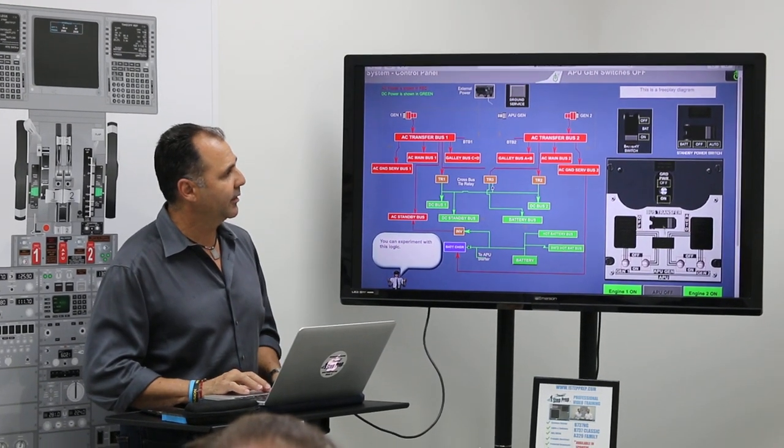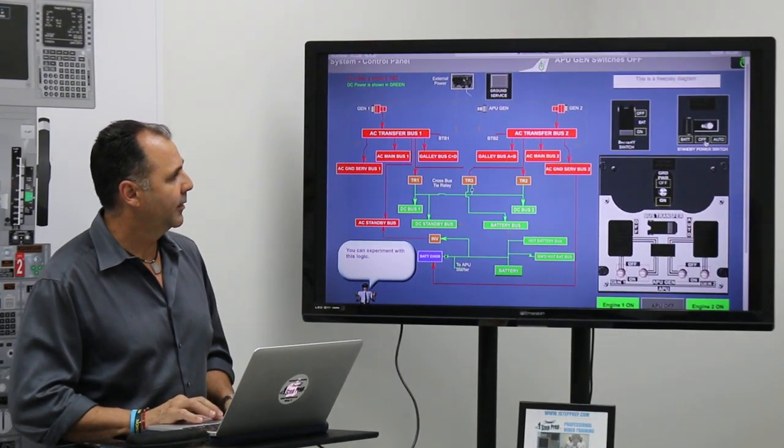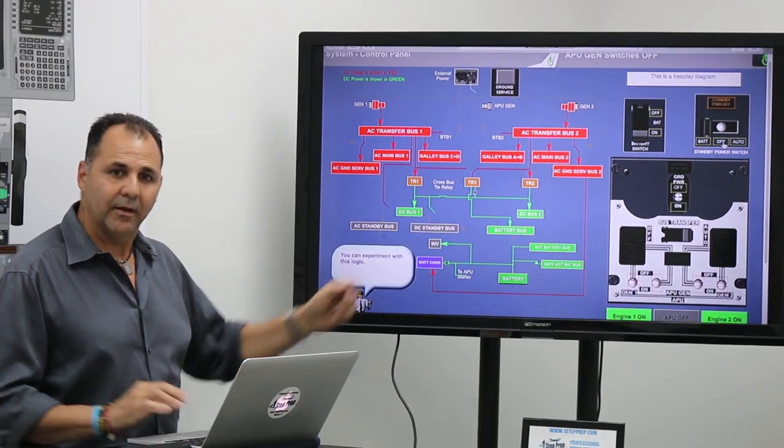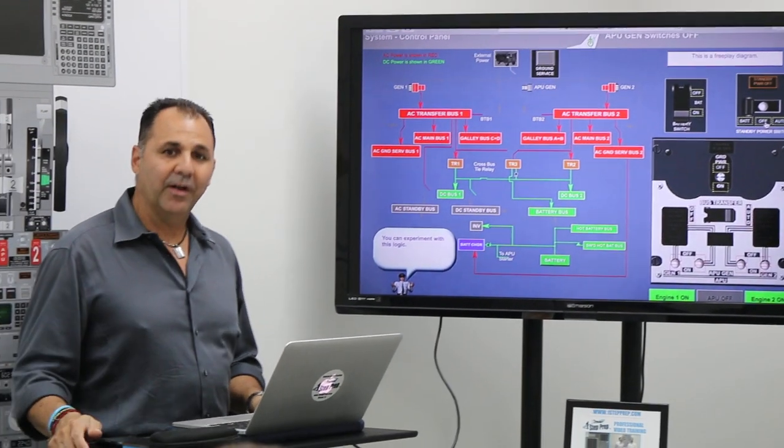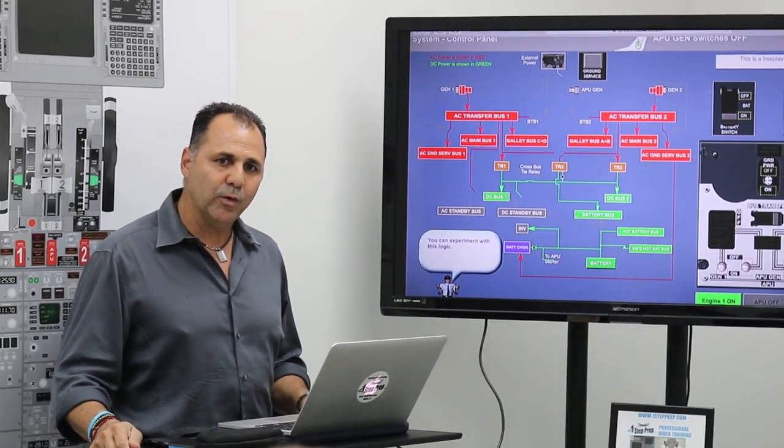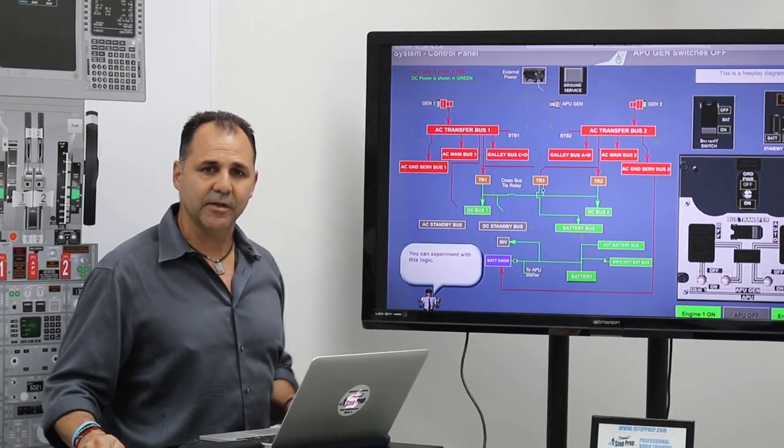Look what happened here when I put the switch in off. See? You only de-power the standby buses. When do you want to do that? Can you give me an example? When can you use the off position?